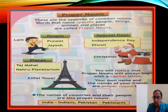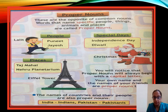Christmas is a proper noun. Under places: Taj Mahal, Nehru Planetarium, Eiffel Tower — there is only one Taj Mahal, these are all specific places with particular names, so they are proper nouns.